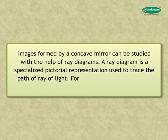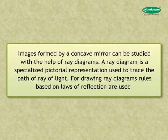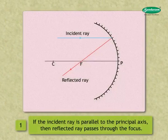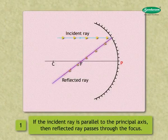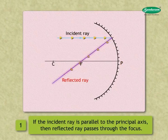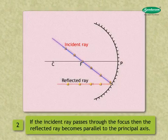Rule one: If the incident ray is parallel to the principal axis, then reflected ray passes through the focus. Rule two: If the incident ray passes through the focus, then the reflected ray becomes parallel to the principal axis.